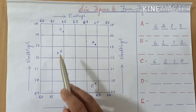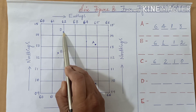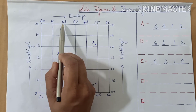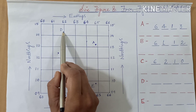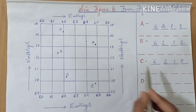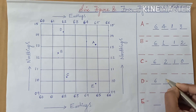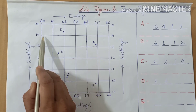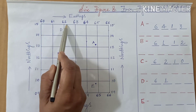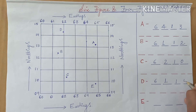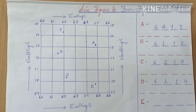Now let us proceed to station D. The eastings are between 61 and 62, so D lies between 61 and 62 — we take the lesser value, 61. For the northings, it is between 14 and 15, so the lesser value is 14. So we got the four figure grid reference of station D: 6114.